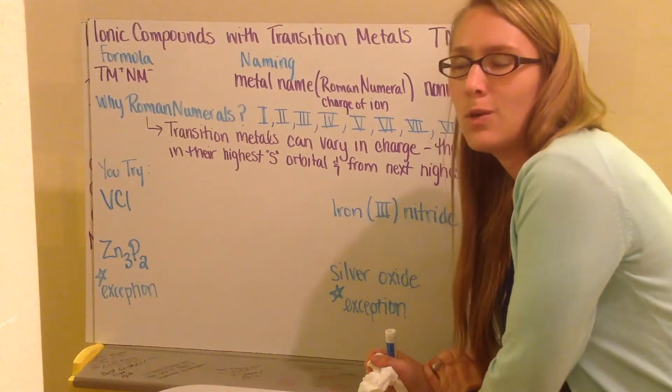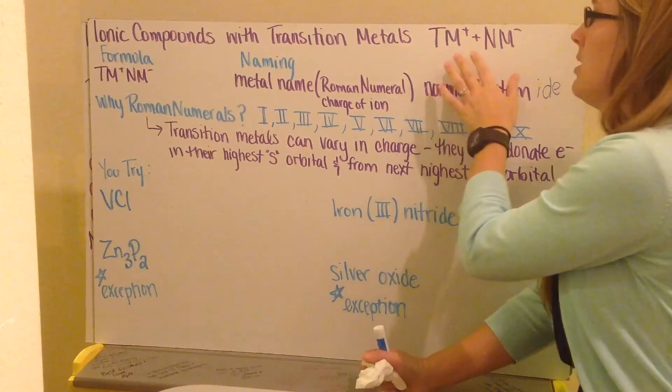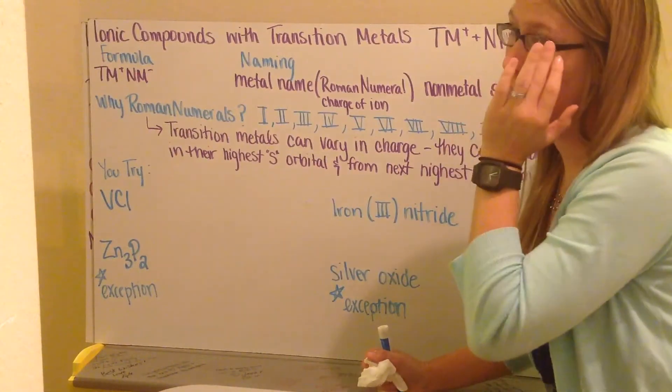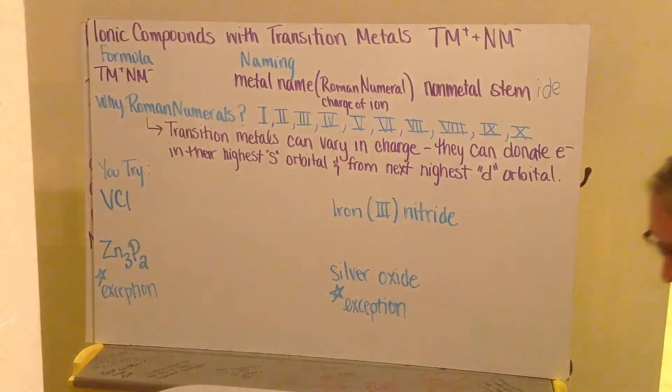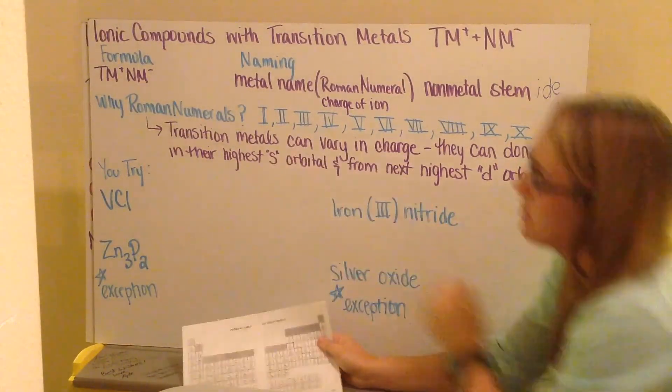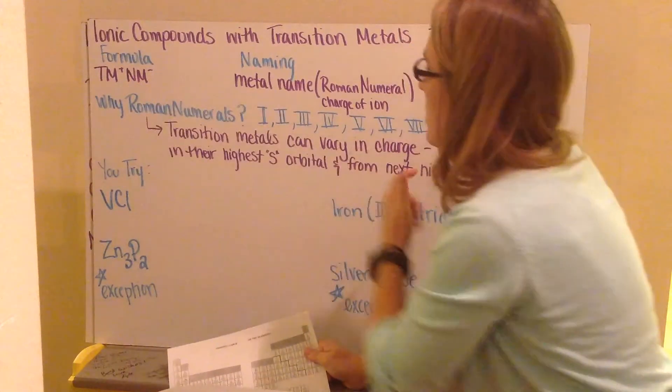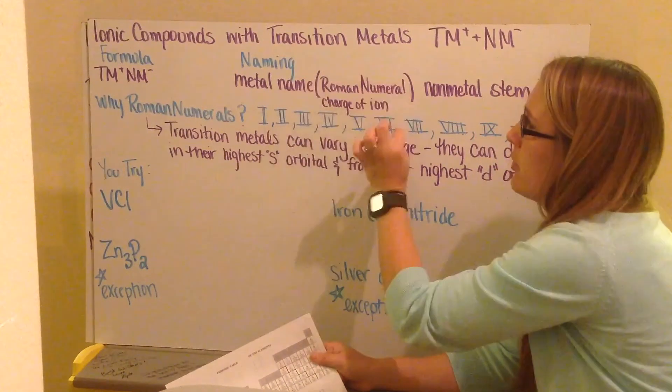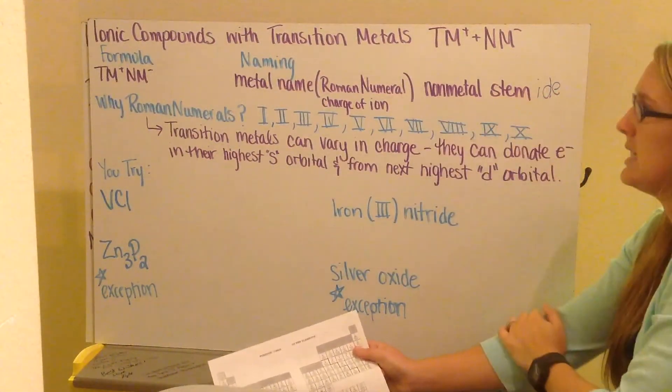Ionic compounds can also involve transition metals. So a transition metal can bind or form an interaction with a non-metal. Transition metals are all the metals in your D block of your periodic table. Transition metals are going to have a positive charge with a non-metal with a negative charge. To name these, we're going to use our transition metal name. And we need to put in a Roman numeral next to it inside parentheses. This is going to tell us the charge of the ion. And then we'll still have our non-metal stem with that -ide ending.